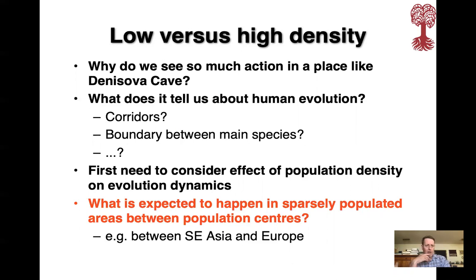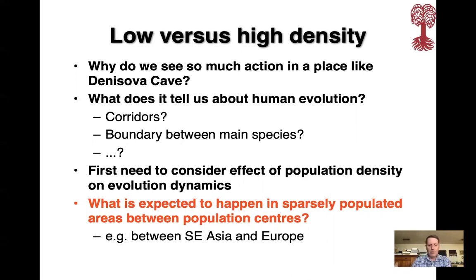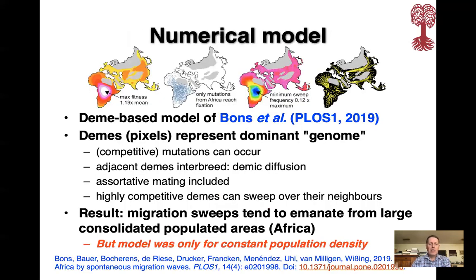Before we try to answer these questions, we first need to consider the effect of population density on evolution dynamics. The question to address is: what is expected to happen in a sparsely populated area between population centers, e.g. between Southeast Asia and Europe? We use a numerical model published in 2019 in PLOS ONE, which is based on DEAMs — pixels in the model where each pixel represents the dominant genome.